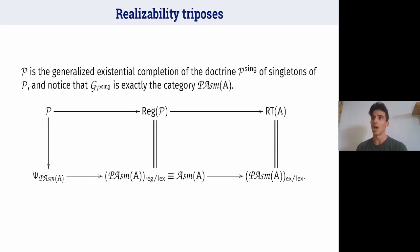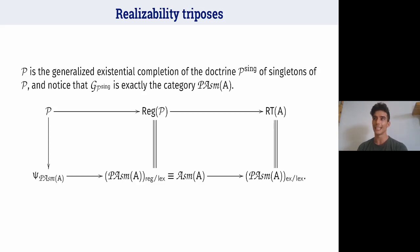For the realizability tripose: if we consider a realizability tripose with a given PCA, this tripose is the generalized existential completion of the doctrine of singleton predicates. The Grothendieck category associated to this primary doctrine is exactly the category of partitioned assemblies. The regular completion of P is equivalent to the regular completion of the category of assemblies, which is equivalent to the category of assemblies itself. Finally, the topos obtained by the triples-to-topos construction — the realizability topos — is equivalent to the exact completion of the category of partitioned assemblies.